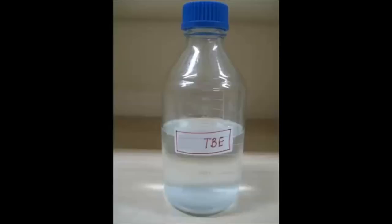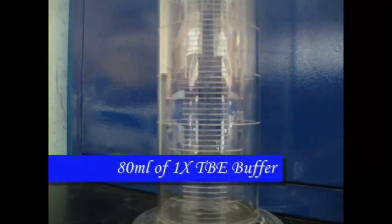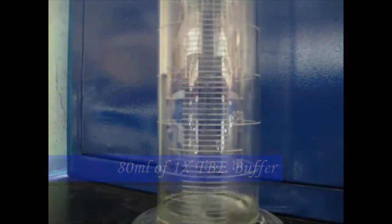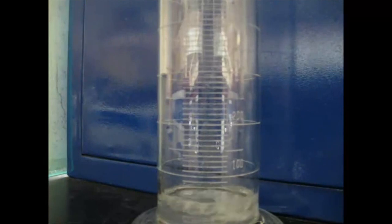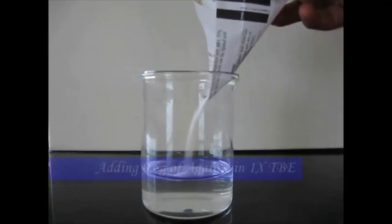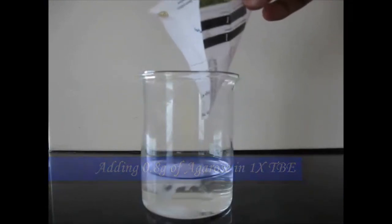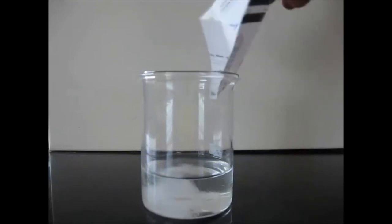To prepare the agarose gel, we require agarose and TBE buffer. Take 80 ml of 1x TBE buffer. Add 0.8g of agarose to this TBE buffer and warm it in microwave for 2 minutes.